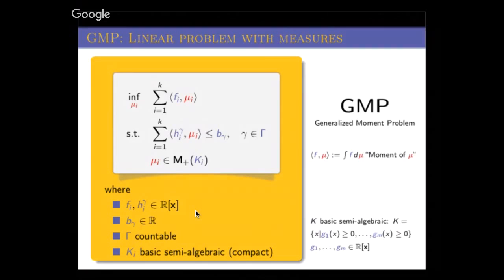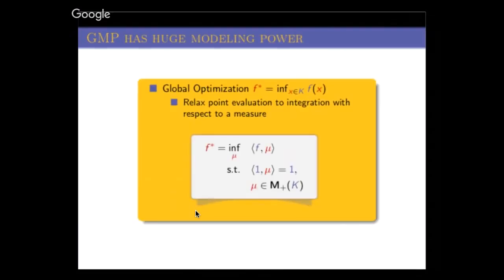This problem is really great because it has huge modeling power. There are books written about which problems you can formulate with it. The easiest example, and probably most known, is global optimization. I'm not saying global optimization is easy—I'm saying that's an easy formulation of the Generalized Moment Problem.